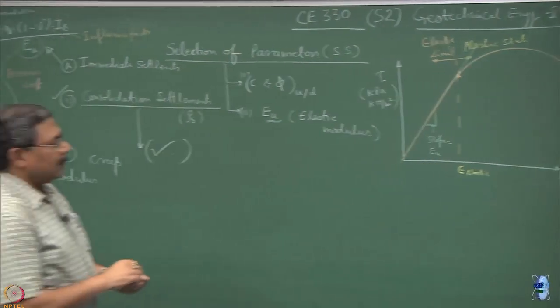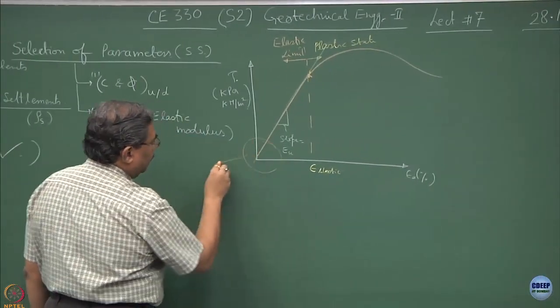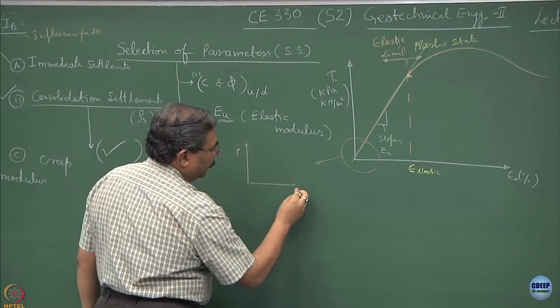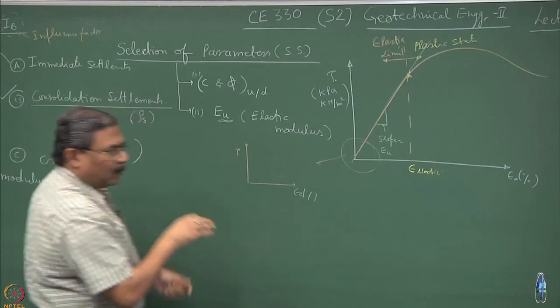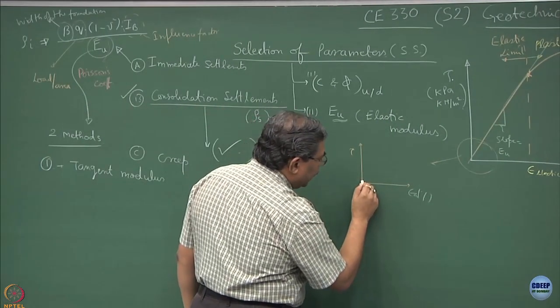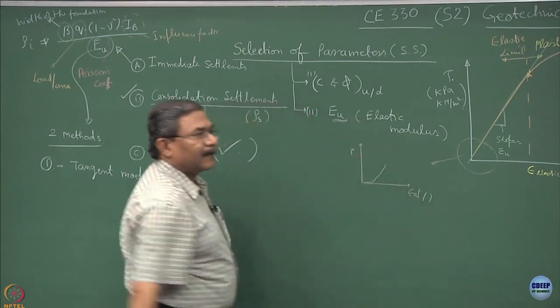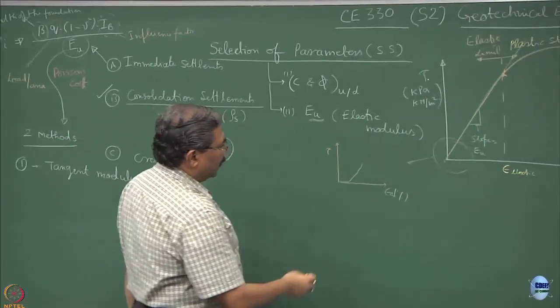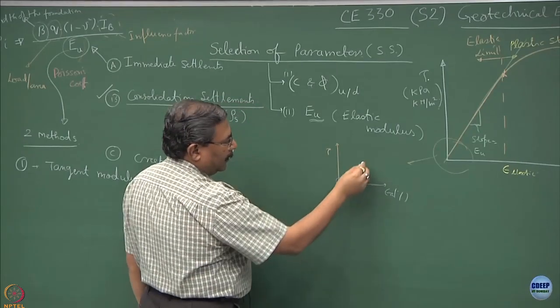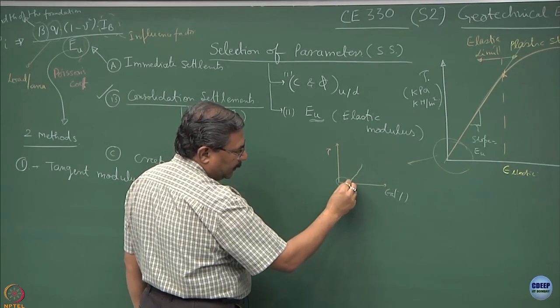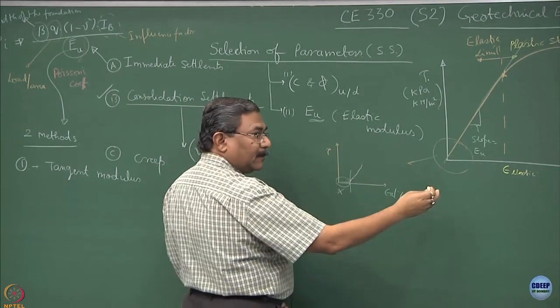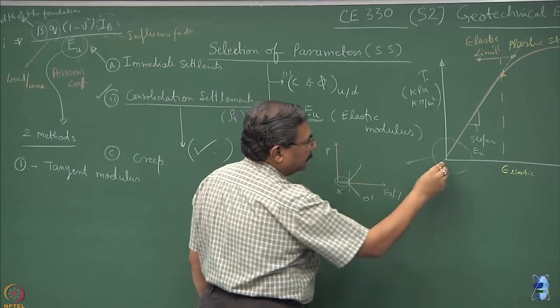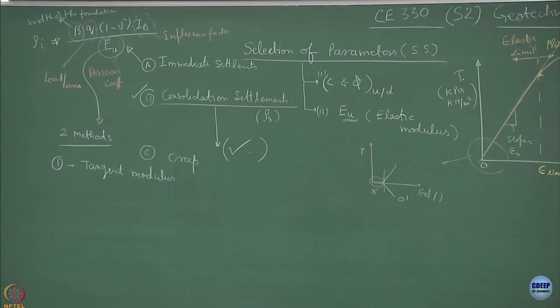Many times, if I zoom this portion of the curve, you will observe that in very low stress ranges, there could be some irregularities in the curve because of poor contact between the loading plate and the sample. Normally, we apply a correction; we ignore this portion of the graph. We shift our origin at this point, which is almost linear, and assume this point to be O prime.